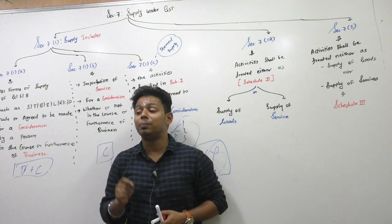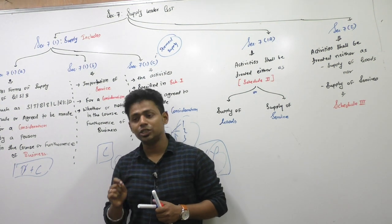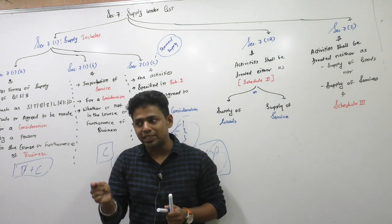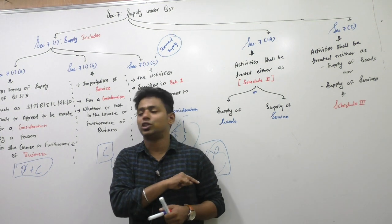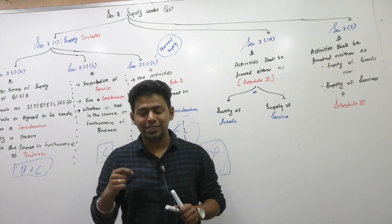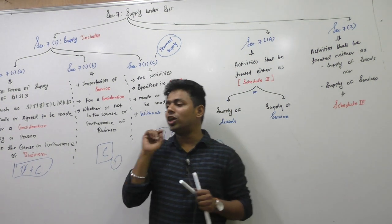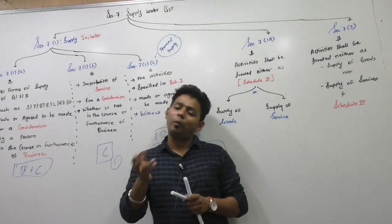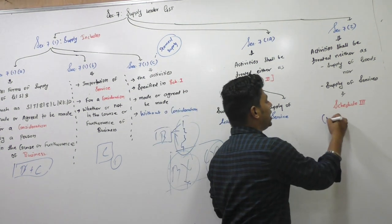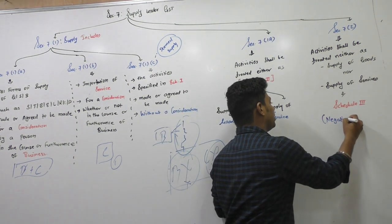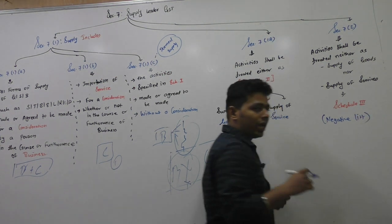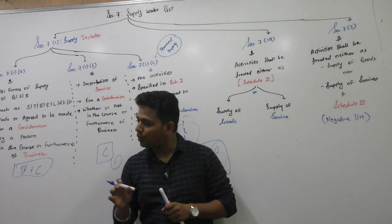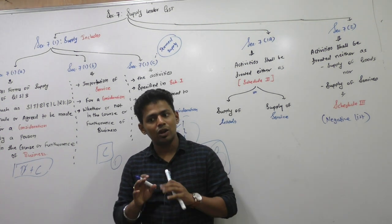Section 7(2) is a blessing. Section 7(2) treats certain activities as neither supply of goods nor supply of service — meaning they are not taxable. In other words, we call it the negative list. Certain activities which are not taxable.